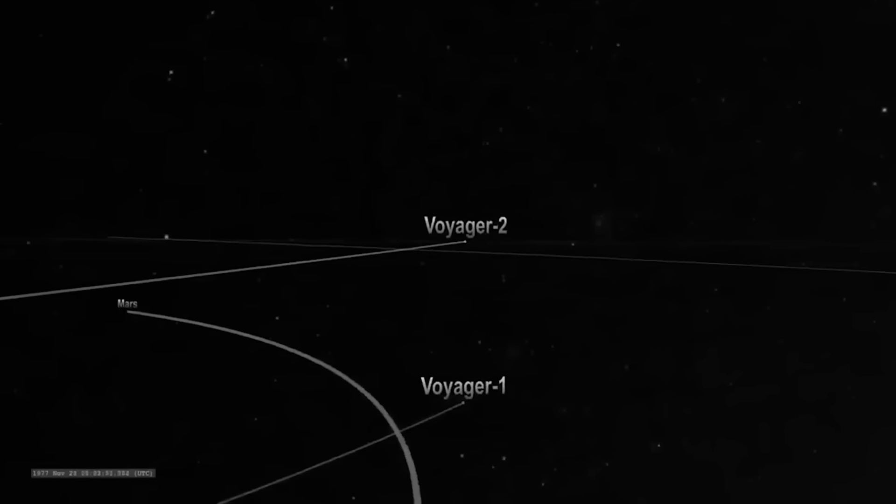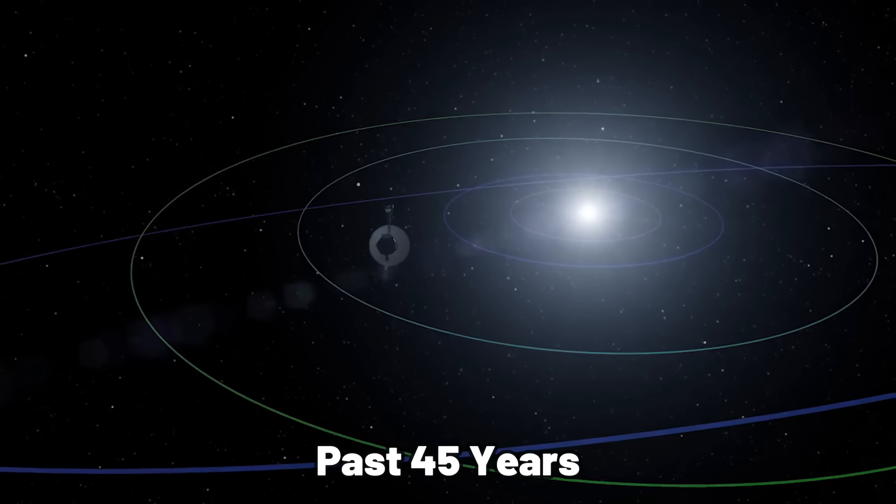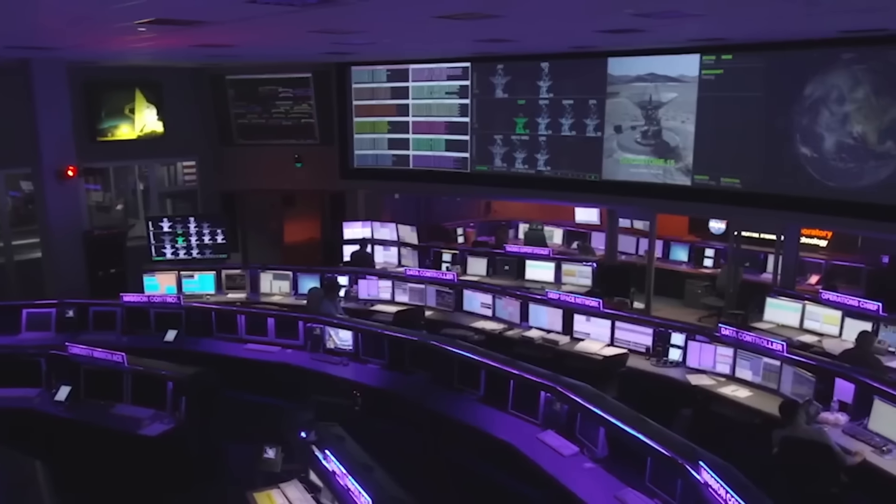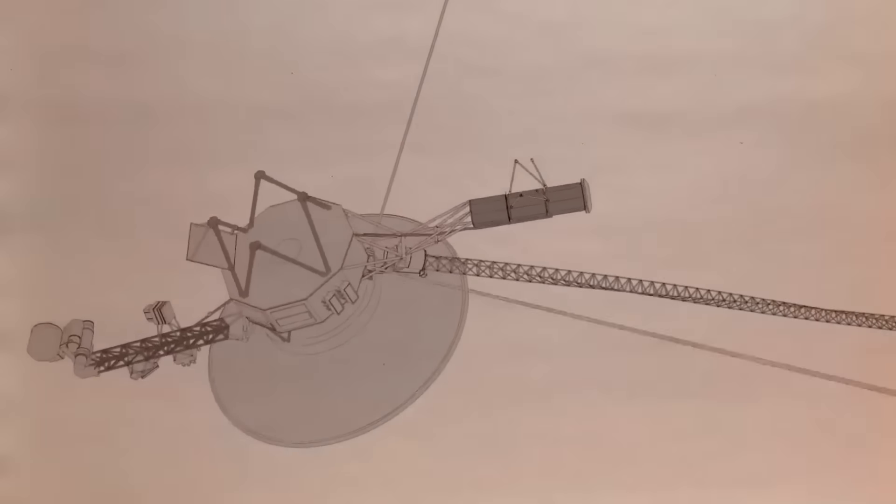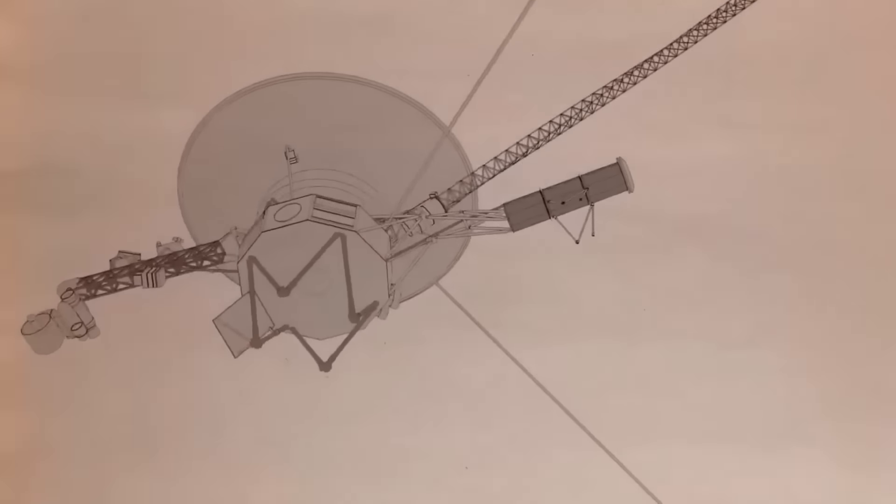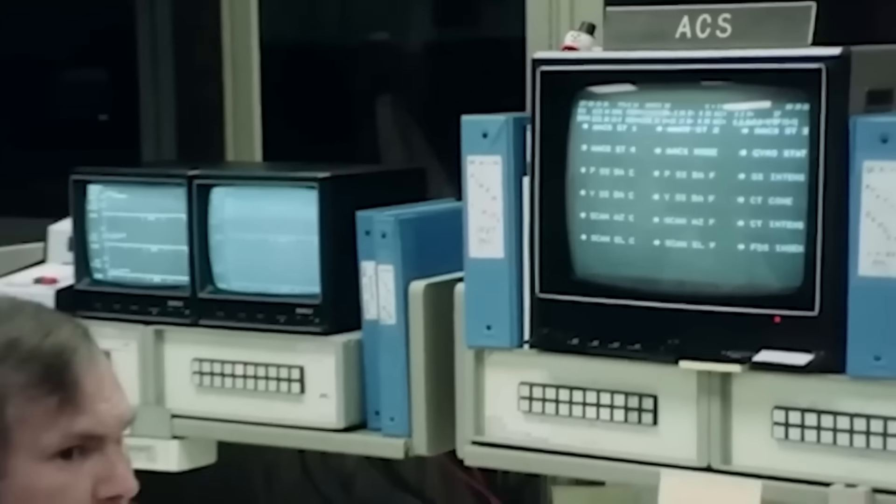Thanks to the twin Voyagers 1 and 2, a great deal of what we know about space has been revealed during the past 45 years. When these missions were launched into orbit, there was no internet, no phones, and no contemporary technology.